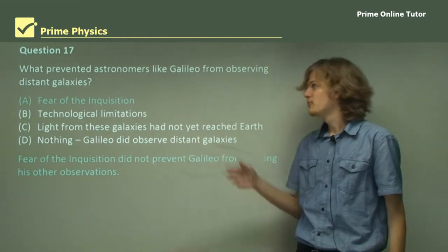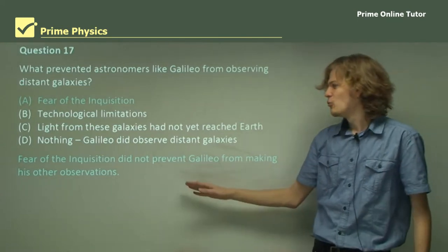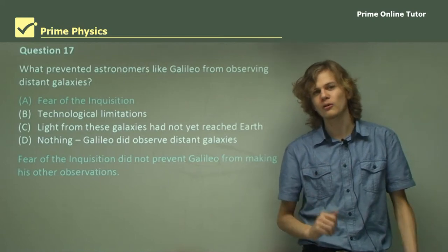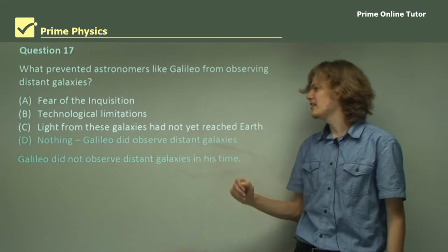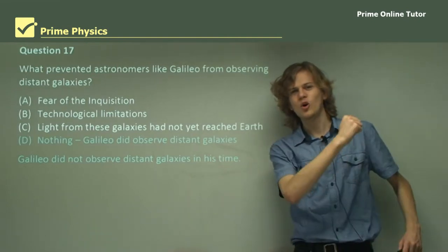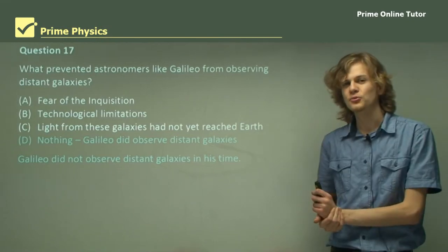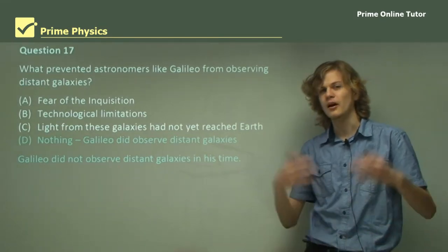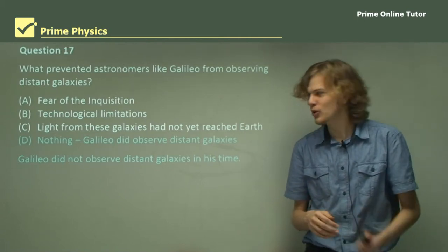So it's not A. Is it then D? Nothing, and Galileo did observe the distant galaxies. Well, this isn't true either. The first records of distant galaxies come from much, much later than Galileo when much more powerful equipment was built to observe them.